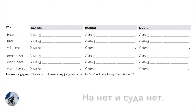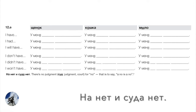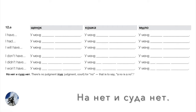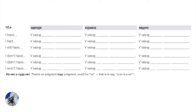Here's a common useful phrase: на нет и суда нет — literally 'there is no judgment on a no,' meaning 'a no means no' and there's nothing you can say about it.